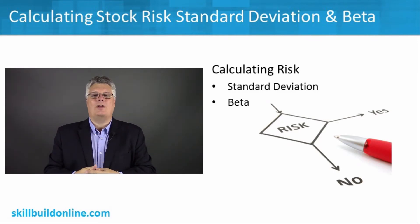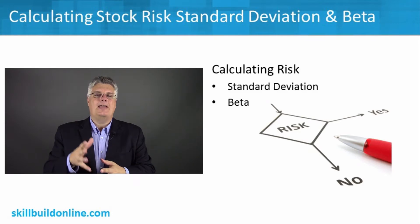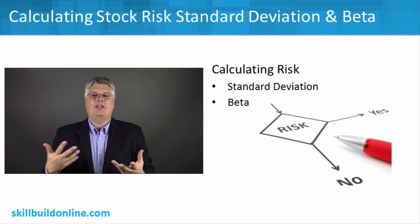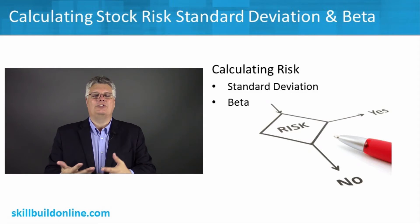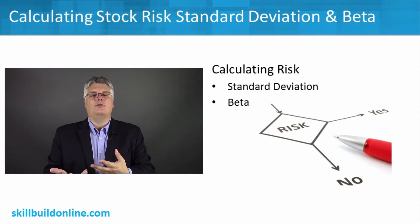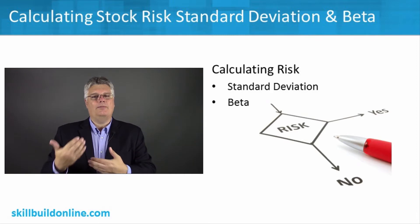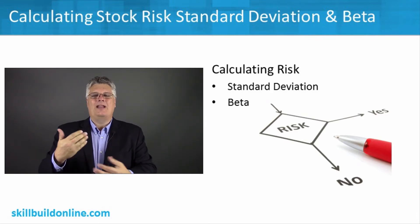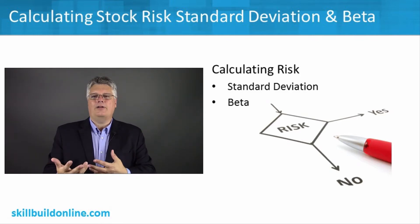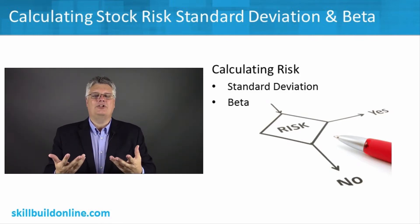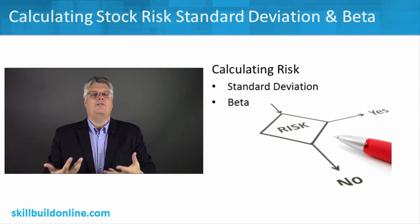There are two big measures around that — there's a lot of measures, but two big ones: standard deviation and beta. Standard deviation is seen a lot around mutual funds, while beta is used more for individual stocks in comparison. They're two different things — similar in that they both calculate risk, but how they arrive at it is a little different. We'll follow those principles: standard deviation around stock mutual funds, and beta around individual stocks.